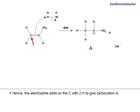Hence, the electrophile adds on the carbon with 2 hydrogen to give carbocation A. This is in agreement with Markovnikov's rule.